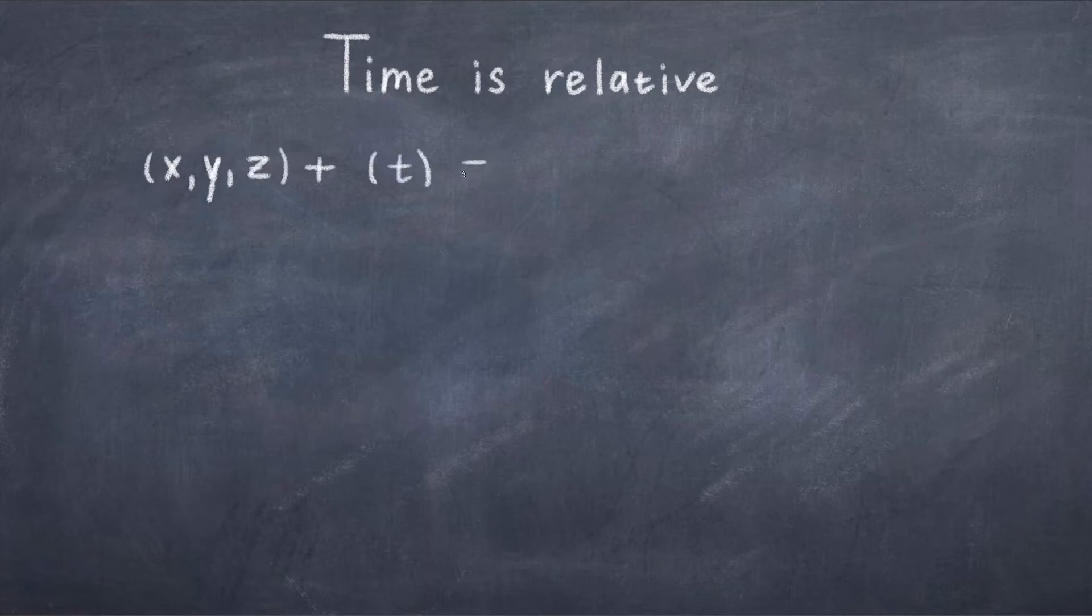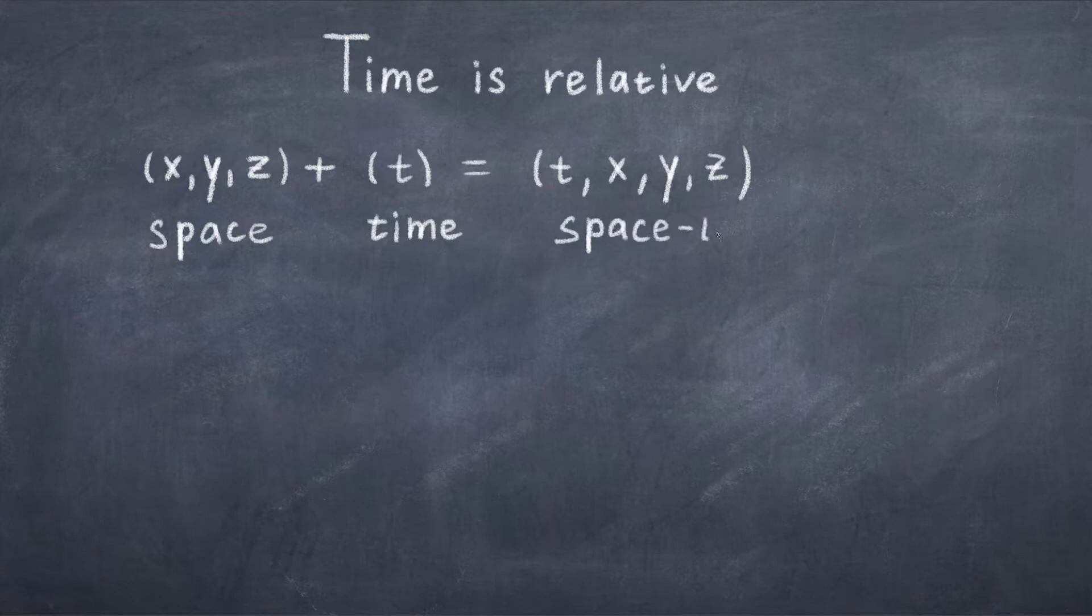This means that all events in the universe can only affect each other if it is possible to send a light signal between the events. This is related to causality and the fact that information cannot travel faster than the speed of light. Thus, if the sun suddenly died, we would only know about it after light from the sun has reached us and told us about it, and this would take around 8 minutes.